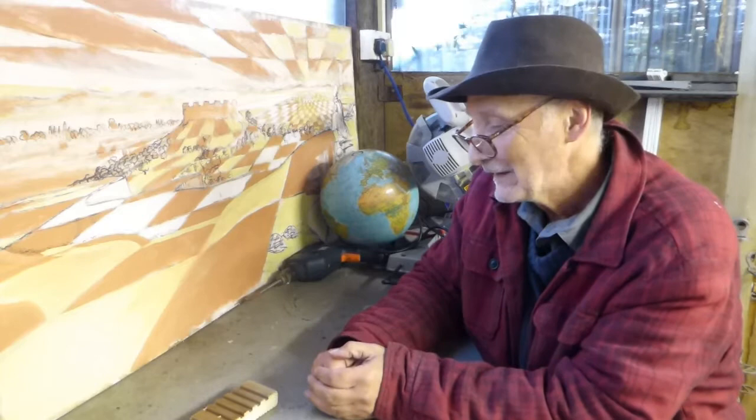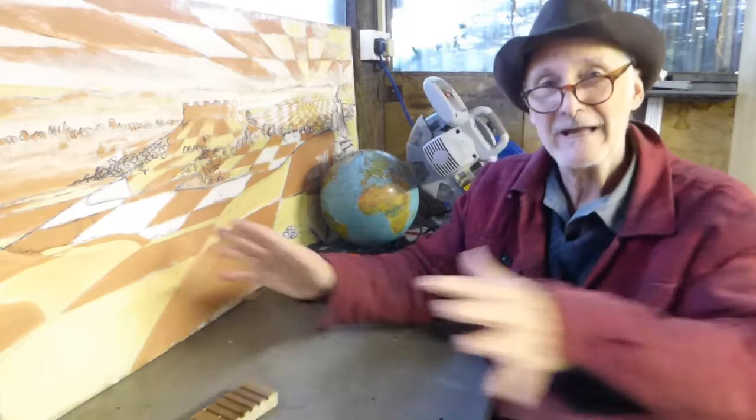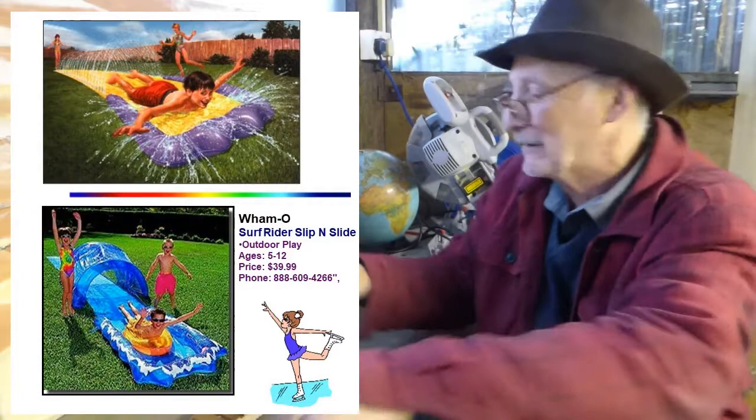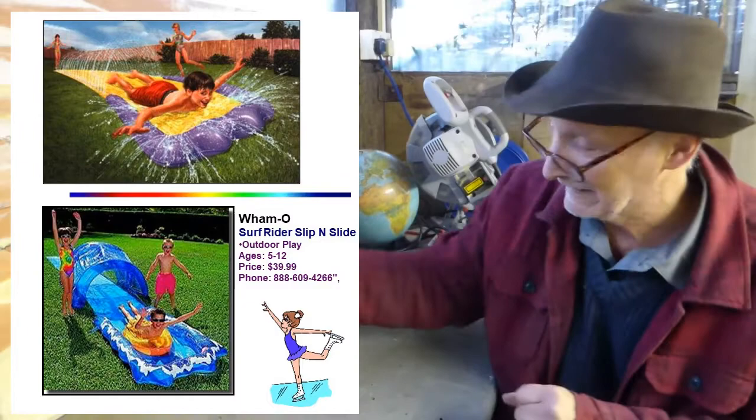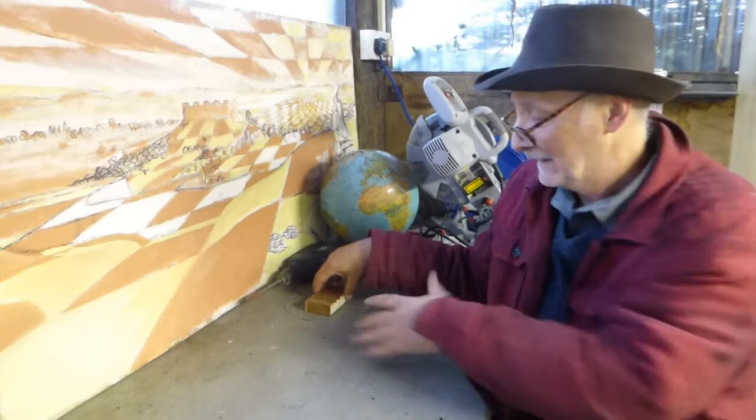I used to bring in the Whammo Slip and Slide Surf Rider—a long rubber sheet you lubricate with water. You can slide along this surface, and it demonstrates very well how bodies will slide over a smooth, lubricated surface. Likewise here, sliding is easy. However, sliding isn't easy if we have a rough surface.